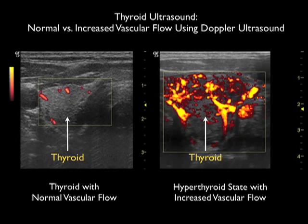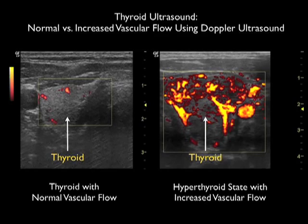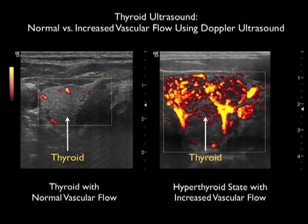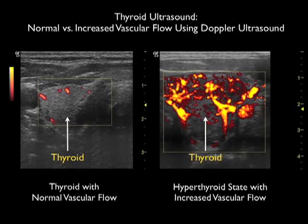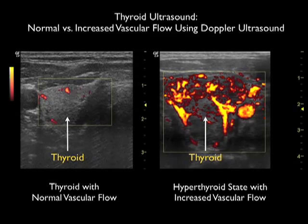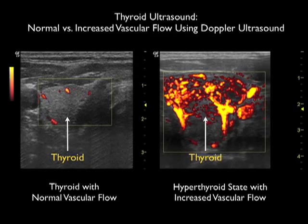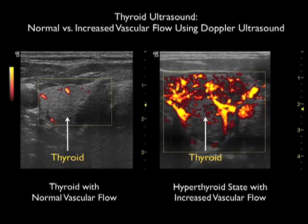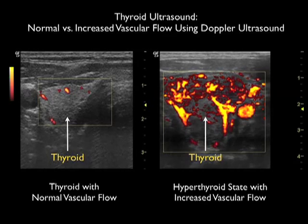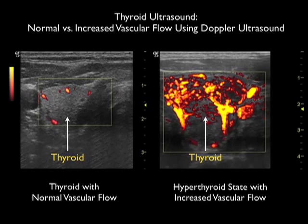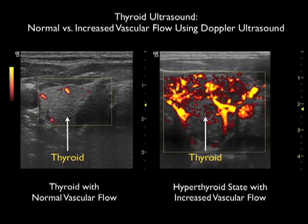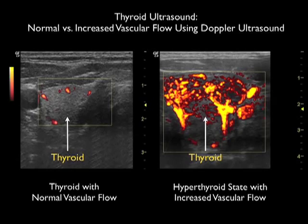So bedside emergency ultrasound can be very helpful in determining if a patient has an abnormal thyroid, especially in hyperthyroid state, where the organ will appear much larger and have increased vascularity on color-powered Doppler.